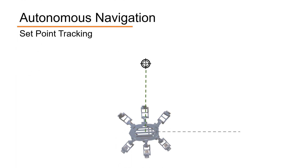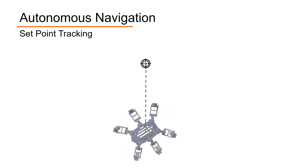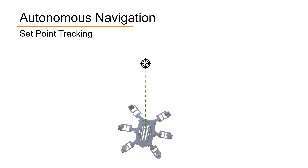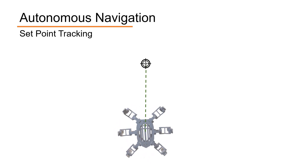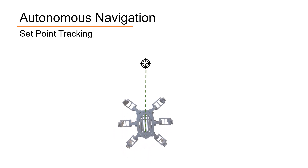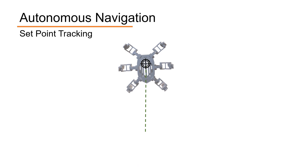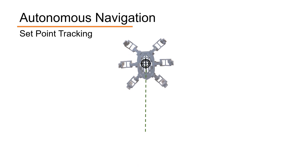So how does the set point tracker work? Given a target point, the necessary heading angle could be easily computed. First, the robot aligns its forward direction along the direction of the target, and then starts moving forward until the position error has converged within a certain tolerance.